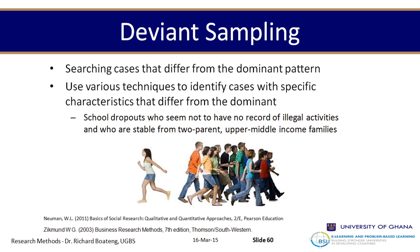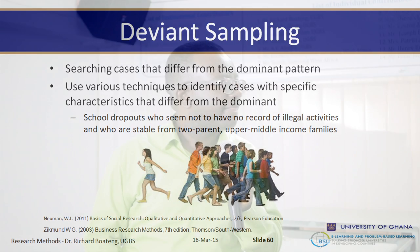Deviant sampling is a type of sampling approach used to find outliers. For example, if everybody is getting 50 out of 100 and one person gets 80, you want to find out how that person achieved 80. Outliers are these types of people we want to study.